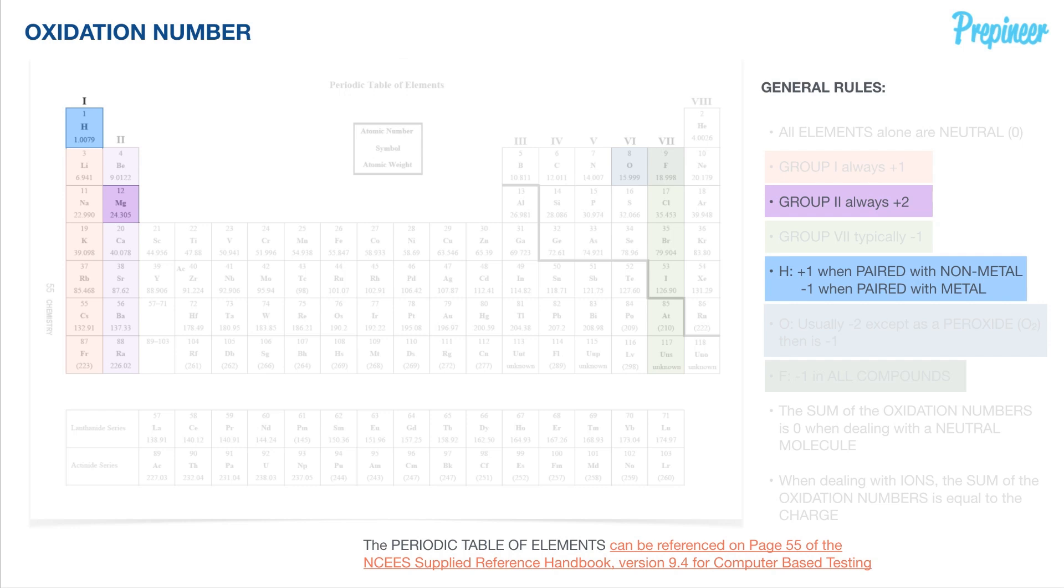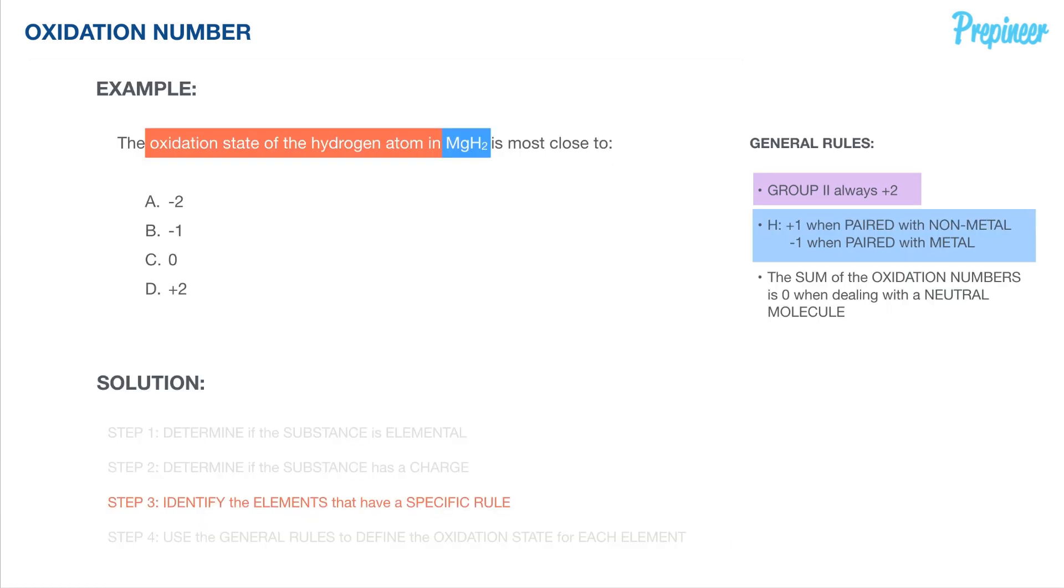So we have our two general rules for the particular element. But we also have to remember that the sum of the oxidation numbers within this molecule will be neutral. So the oxidation numbers will add up to zero. Again, that is huge. You're not getting the oxidation number of an unknown element at any point without knowing if it has a charge or if it's going to be neutral. So let's go ahead and pull these general rules back over to our problem statement.